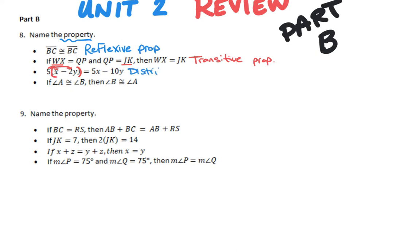The next one says: if angle A is congruent to angle B, then angle B must be congruent to angle A. It just does a little switcheroo — kind of like our converse — it just flips it around. That's our symmetric property.